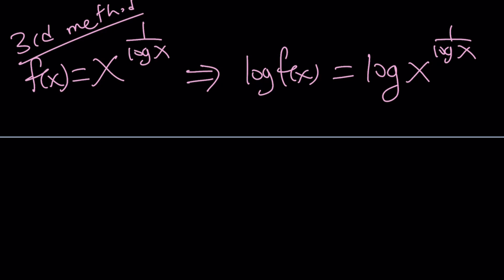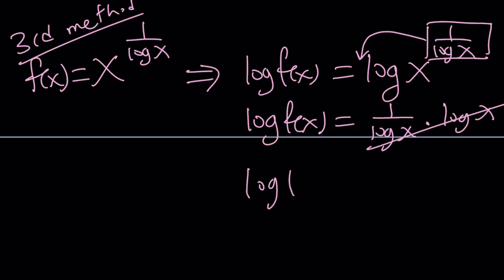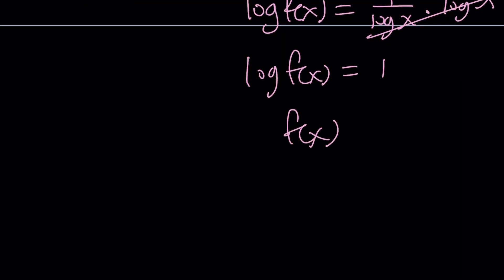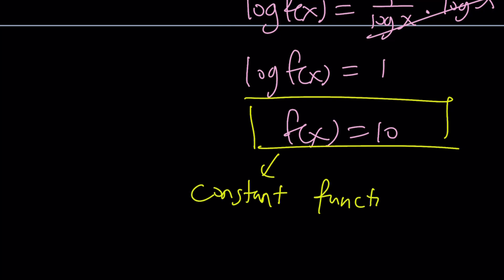Awesome. Then we can move this to the front. That's what is cool about logging both sides. And we get log of f of x equals 1 over log x times log x. And this becomes 1. So, log f of x equals 1, which means f of x equals 10. Wow. What is that supposed to mean? It means this is a constant function, right? Even though it contains some variables, they kind of cancel each other out. And the result turns out to be a constant function.